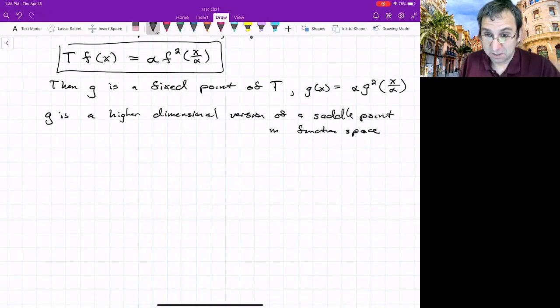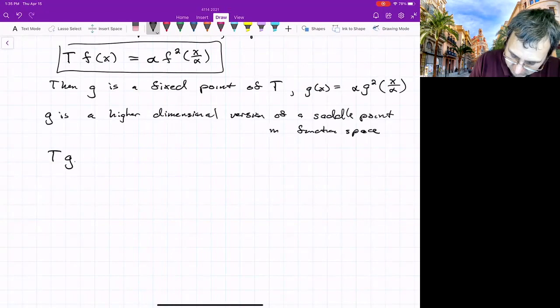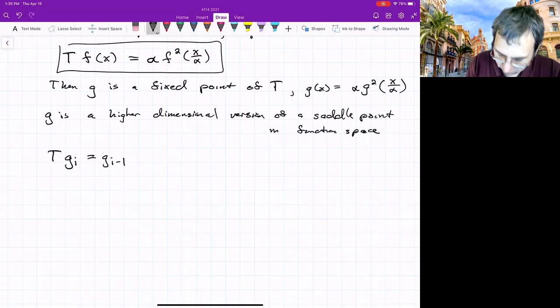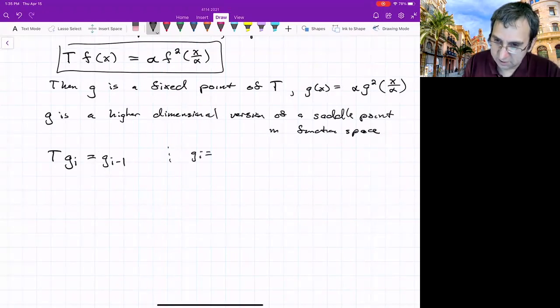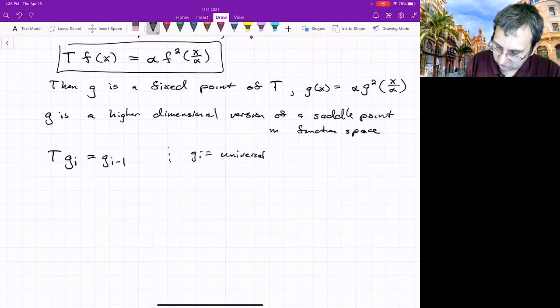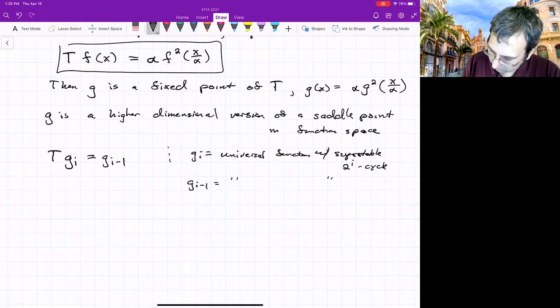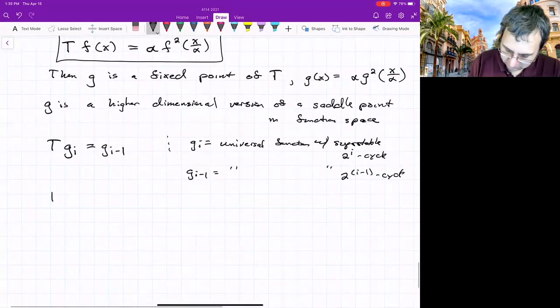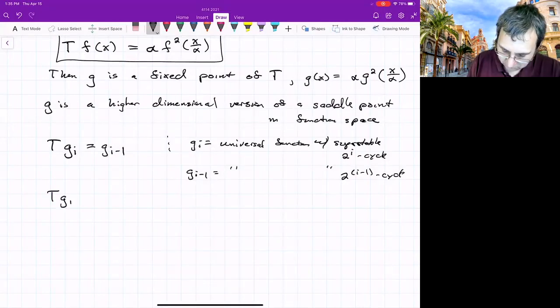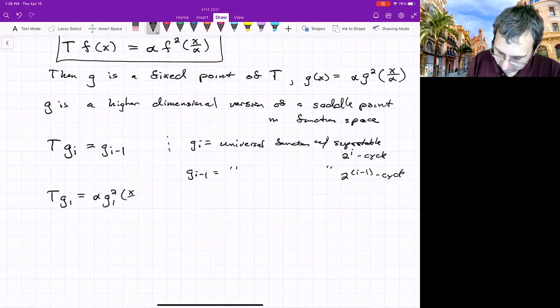So maybe to see that g is a fixed point, look at what T does to g_i. T operating on g_i gives you g_{i-1}. Remember what g_i was? g_i is the universal function with a super stable 2 to the i minus 1 cycle. Maybe you could see this if you just say, okay, let's take T of g_1. T of g_1, so this is something with a super stable 2 cycle, is alpha g_1 squared of x over alpha.